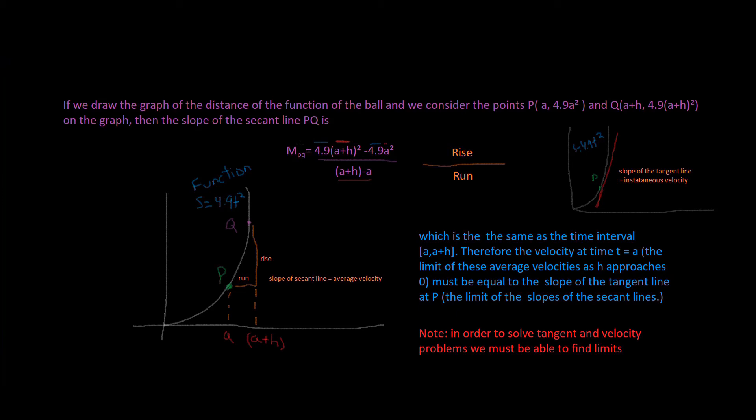So, this is the slope of the secant line PQ, remember, equals 4.9(A plus H) squared minus 4.9A squared, over A plus H minus A. So, this just looks like a bunch of numbers right now, but I'll explain it right now. So, what the slope is is rise over run. So, this is our given graph. The form of the function is S equals 4.9T squared. And so, these are two points, P and Q. We denote P as A. So, this is our initial point. Right there is A. A is our initial point.